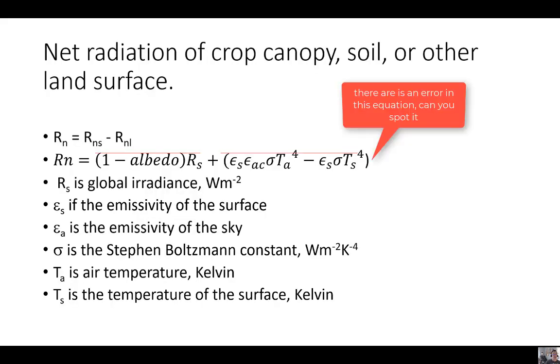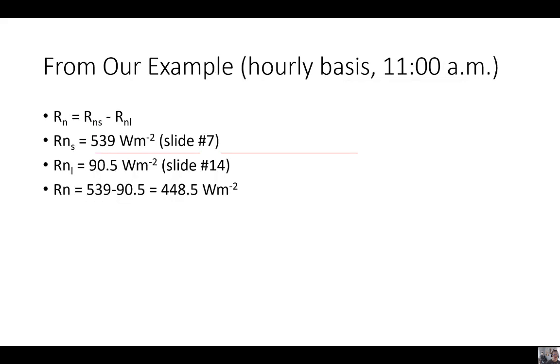Finally, we're ready to solve for net radiation of the land surface. Net radiation is the net shortwave minus the net longwave. Here you see the full formula there. Rs is global irradiance in watts per meter squared. See the emissivities, the Stefan-Boltzmann constant, and the air temperature. If we go back to our example, the net radiation is net shortwave minus the net longwave. There's our two previous results. We sum those up together and we get a net radiation of 448.5 watts per meter squared. That's what would go into our ET formulas, for example.